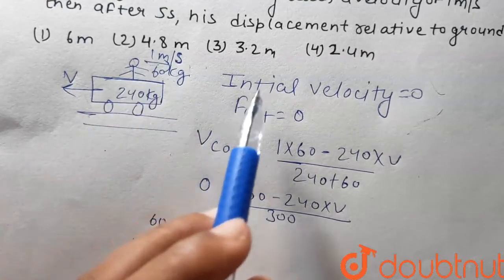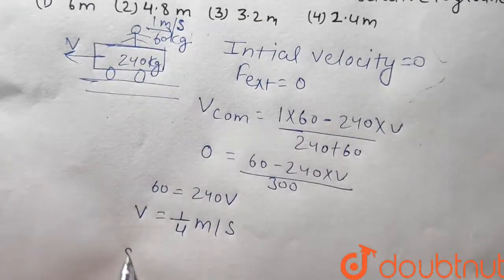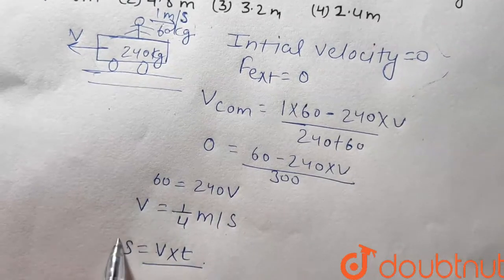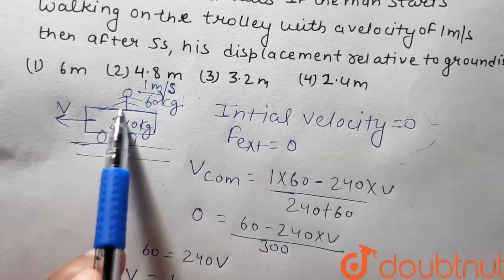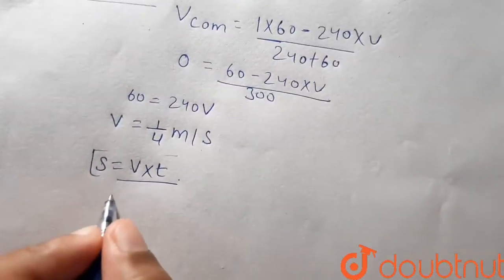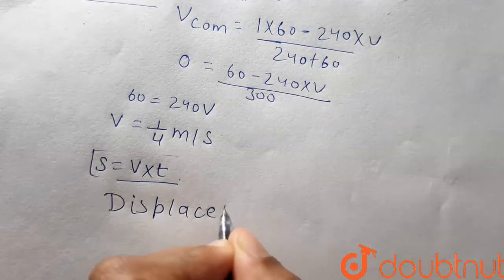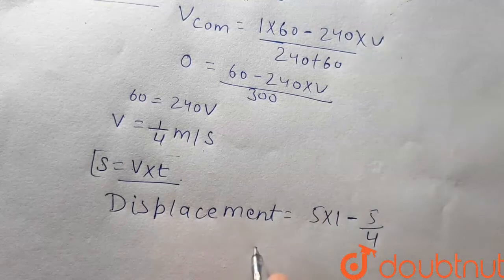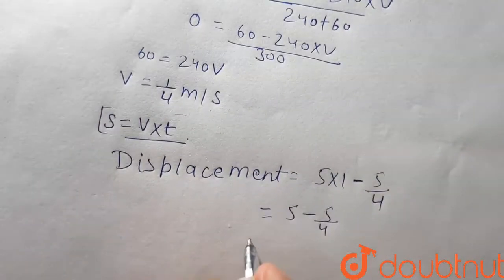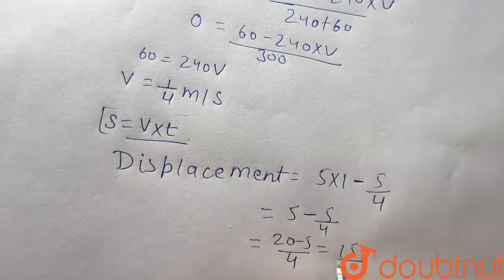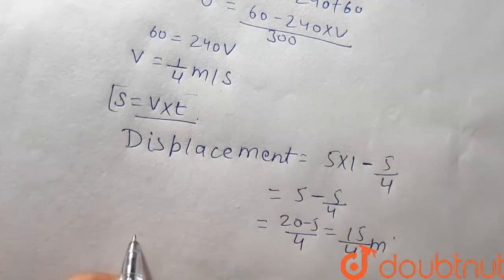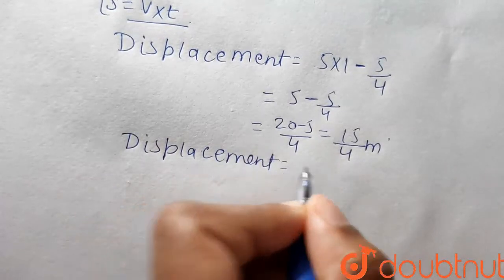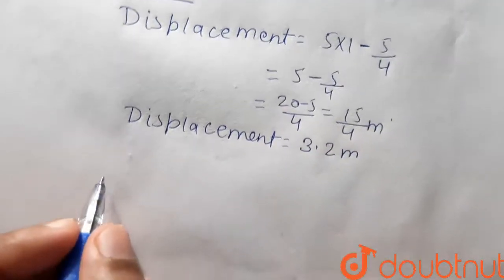Now for displacement: the man's displacement is speed into time, which is 1 meter per second into 5 seconds equals 5 meters. The trolley displacement is 1/4 into 5 equals 5/4 meters. So the man's displacement relative to the ground is 5 minus 5/4 equals 20 minus 5 over 4, which is 15/4 equals 3.75 meters. So displacement equals 3.2 meters — option 3 is correct.